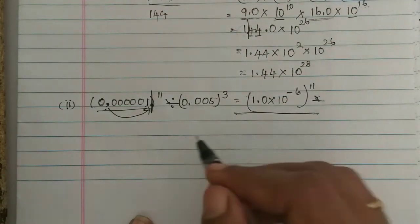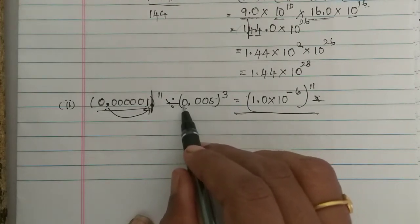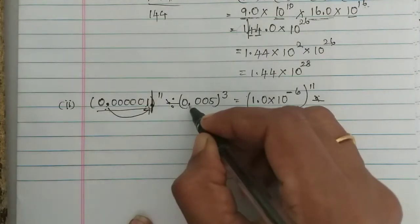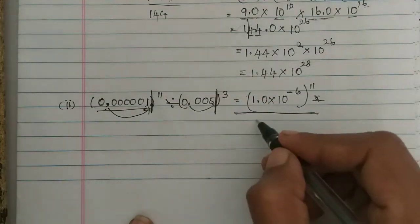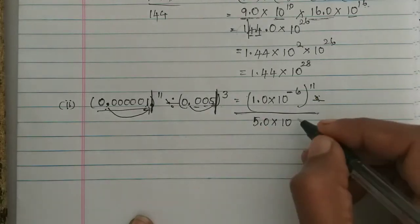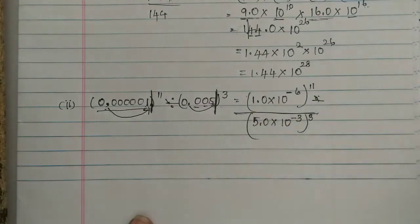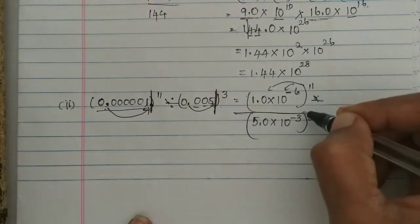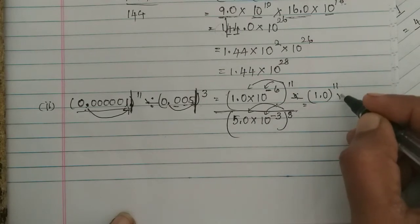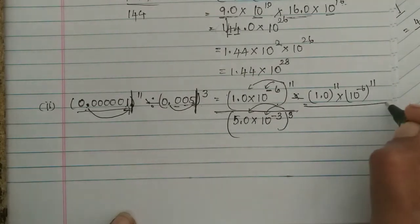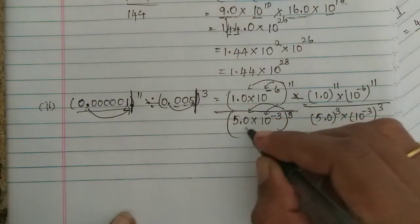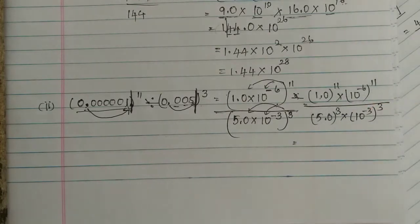For the denominator: 0.005 — the point is 0, so this is a decimal less than 1, giving 10 to the power minus 1. Moving the point, we get 5.0 × 10 to the power minus 3. The whole cube is power 3, and 3 is a whole number.